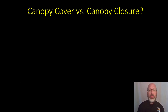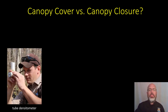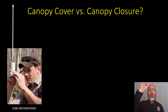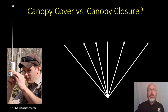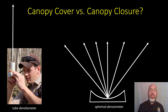In a previous video, we talked about canopy cover. In this case, we're talking about canopy closure, and I want to take a minute to talk about the difference between the two. In the video on canopy cover, we used a tube densitometer and we were looking straight up from a single point, deciding whether that point was obscured by vegetation. For closure, we need to take a much wider angle view of the sky above, and to do that we need a different tool — a spherical densiometer.